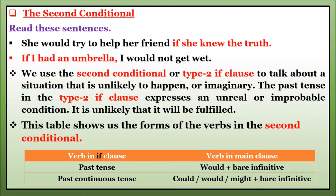In type 2 conditional, you can also use modals in the main clause. When using past tense in the if clause, we use modals — could, would, might — along with the bare infinitive. We use these to express degree of certainty, permission, request, or recommendation. Mostly we use 'would,' and sometimes 'could' or 'might.'